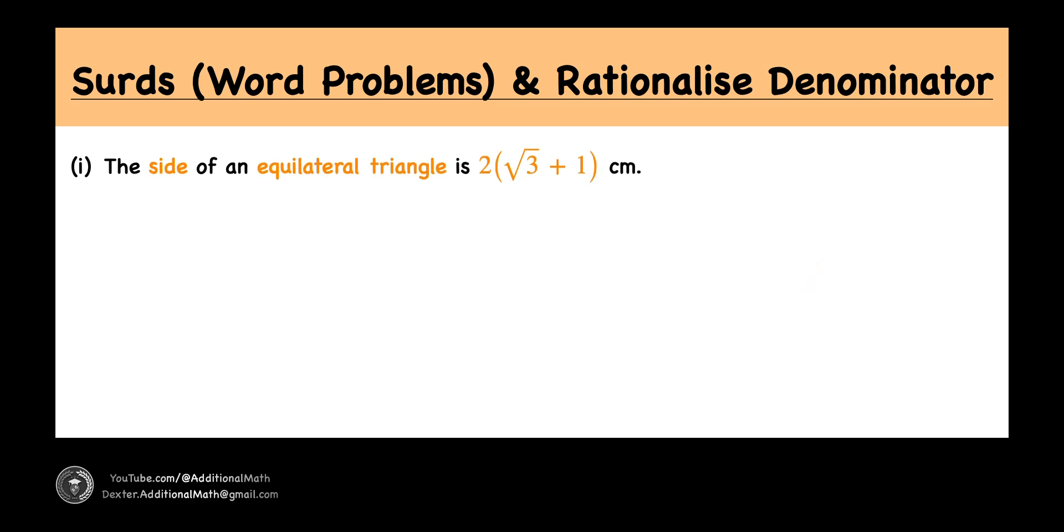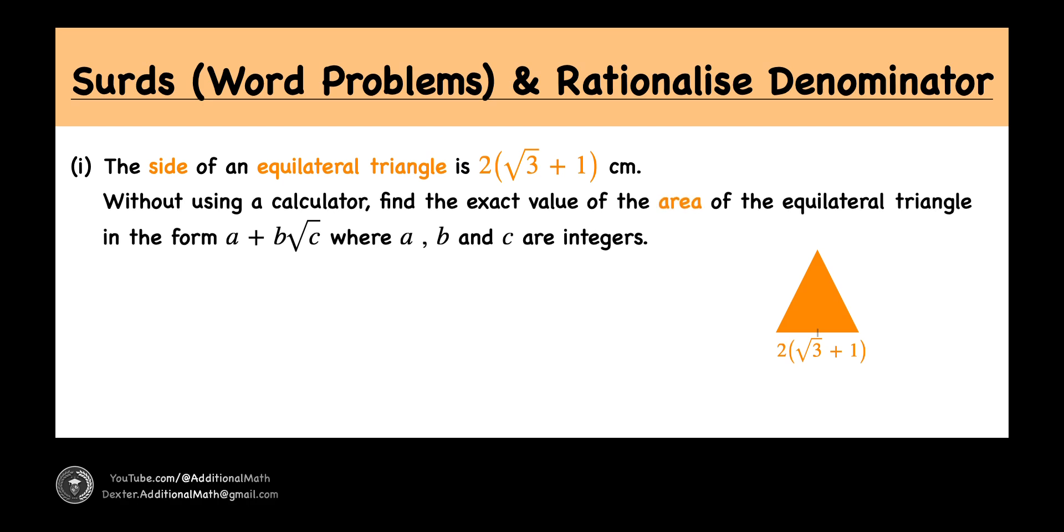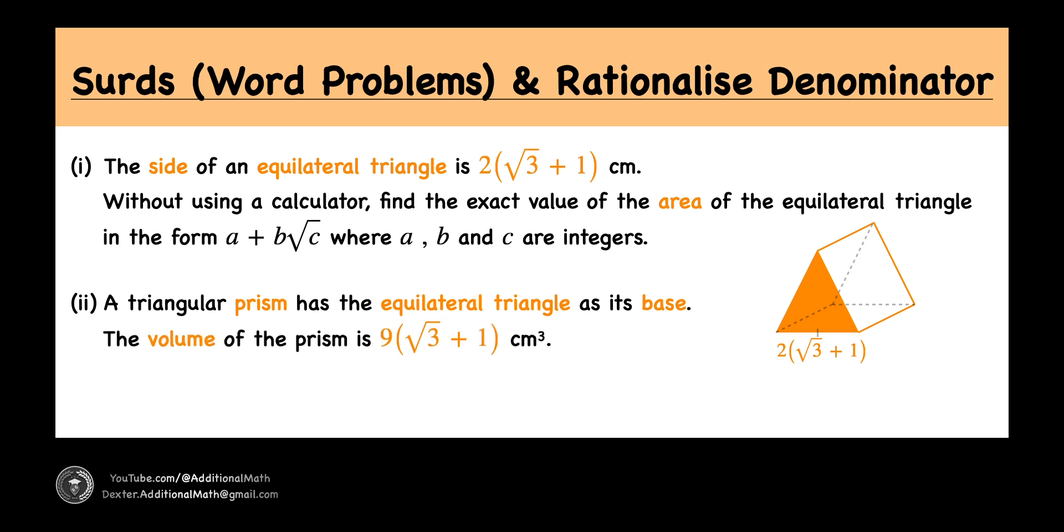In part one, given the side of an equilateral triangle is 2(√3 + 1) cm, find the exact area in surd form a + b√c where a, b, and c are integers. In part two, the same triangle forms the base of a triangular prism with volume 9(√3 + 1) cm³. Find the height in the form m + n√l where m, n, and l are rational numbers. Pause to give it a try, and when you're ready, keep watching to learn how to solve this problem.